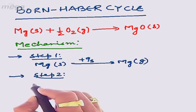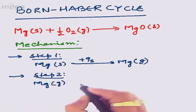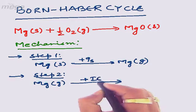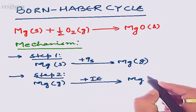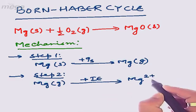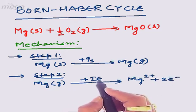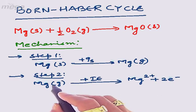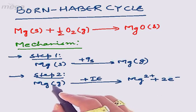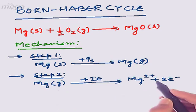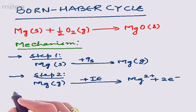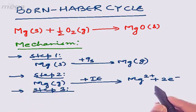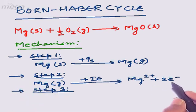In step two, magnesium gas is provided with ionization energy, converting it into Mg²⁺. When ionization energy is provided to magnesium, the two electrons present in the valence shell of magnesium become excited and leave the valence shell, forming the Mg²⁺ ion.